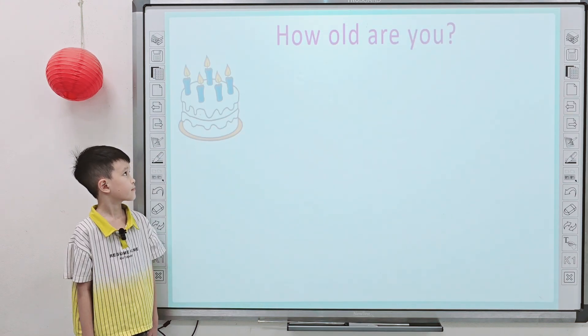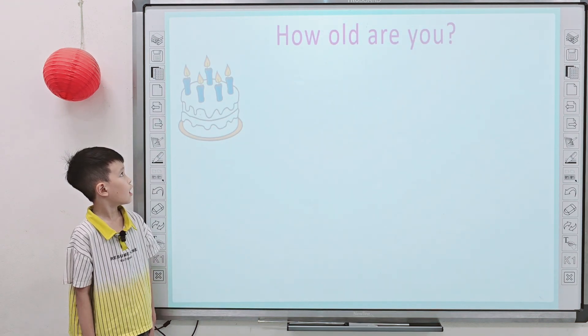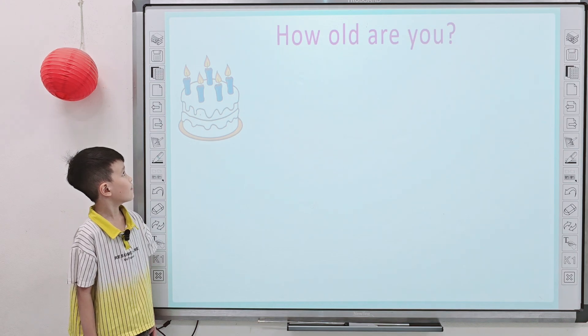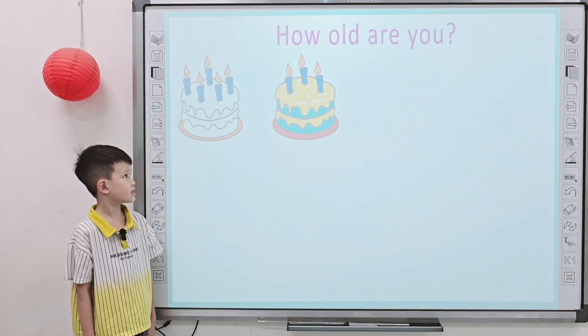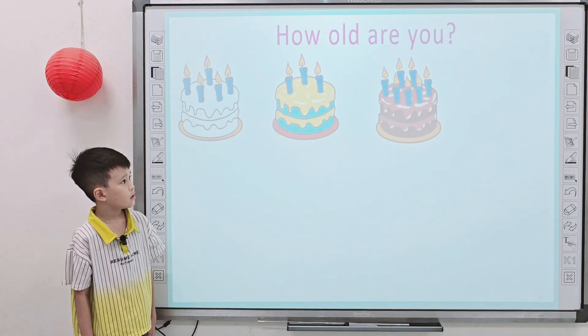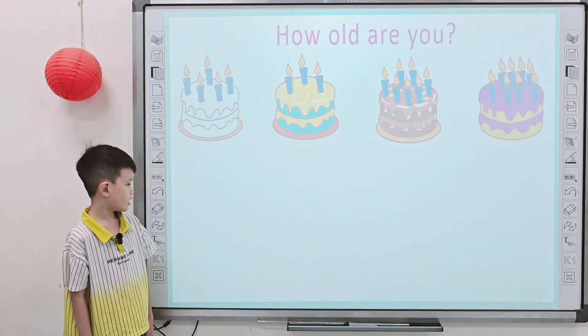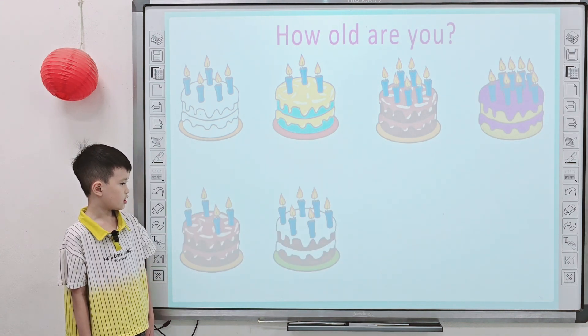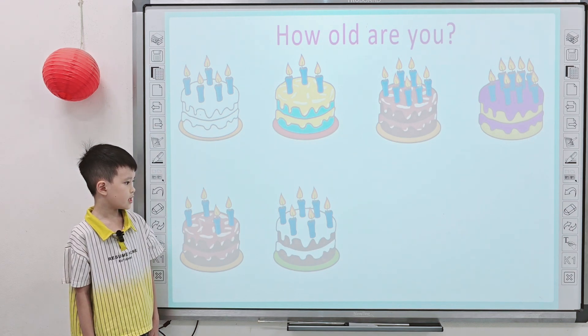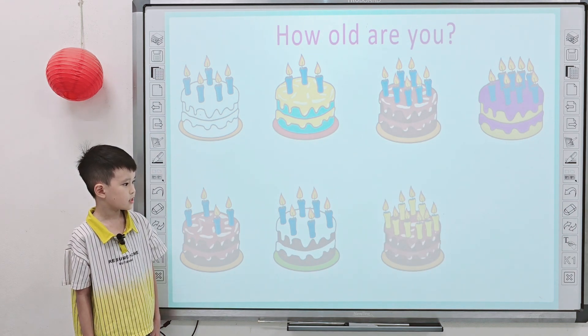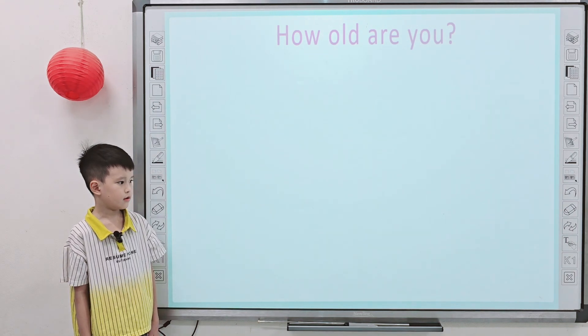Look at the screen. Tell me, how old are you? I'm five years old. I'm five years old. How old are you? I'm seven years old. How old are you? I'm seven years old. I'm eight years old. I'm four years old. I'm six years old. I'm nine years old. How old are you? I'm ten years old. Good, I'm my son.